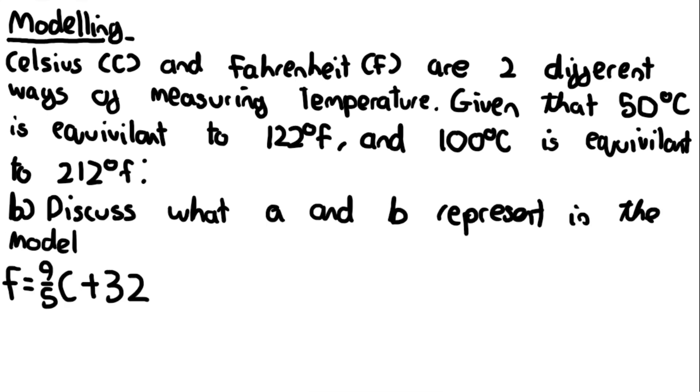For part b this is actually the modelling part of the question where it wants you to discuss what a and b represent in the model, what a and b actually represent in real life. You may have noticed that the equation is actually in the form y equals mx plus c. The only difference obviously is that x and y are replaced by c and f. Therefore if we want to discuss what a and b represent in real life, we can just compare them to what they mean in the y-intercept and the gradient.